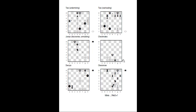Checkmates: the black queen is attacking the white king, nothing can capture the queen, nothing can block, and squares d2 and e2 are both protected by the black king. So the white king is trapped — it's a special kind of net, just for the king.